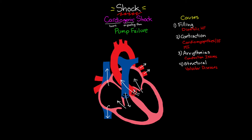The first cause we'll talk about is filling issues, most notably diastolic heart failure. What happens with diastolic heart failure is that over time the ventricle walls become enlarged and stiffer. As a result, you end up with less space within the ventricle as well as decreased compliance within the heart wall, ultimately leading to a decreased preload and a decrease in cardiac output.